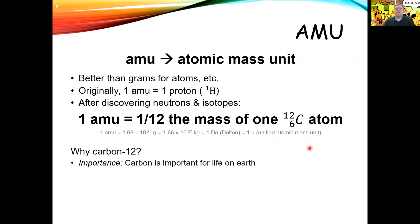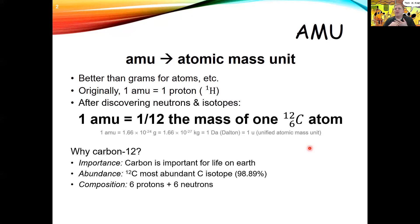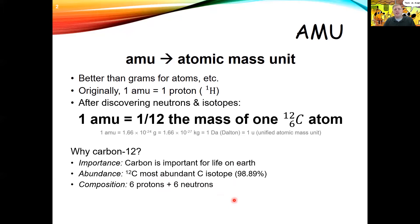Now, why did we settle on carbon-12? The idea was that carbon is really important to life — it's present in everything we've found that's alive, and is a really critical component, as are oxygen, nitrogen, and hydrogen. Carbon-12 was also selected because it's the most abundant carbon isotope, making up about 98–99% of carbon. And it's composed of six protons and six neutrons, and there's just a certain amount of elegance and symmetry there.